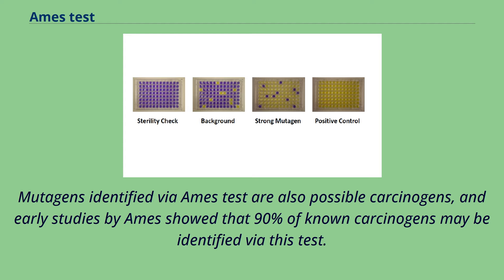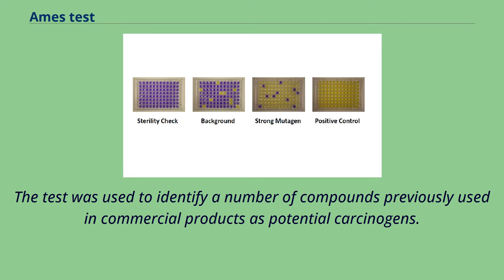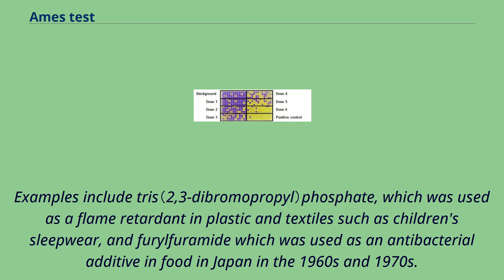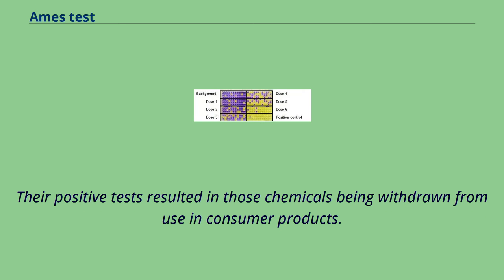Mutagens identified via the Ames test are also possible carcinogens, and early studies by Ames showed that 90% of known carcinogens may be identified via this test. Later studies however showed identification of 50–70% of known carcinogens. The test was used to identify a number of compounds previously used in commercial products as potential carcinogens. Examples include tris phosphate, which was used as a flame retardant in plastics and textiles such as children's sleepwear, and furylfuramide, which was used as an antibacterial additive in food in Japan in the 1960s and 1970s. Furylfuramide had previously passed animal tests, but more rigorous tests after its identification in the Ames test showed it to be carcinogenic. Their positive tests resulted in those chemicals being withdrawn from use in consumer products.